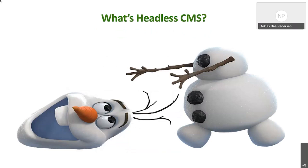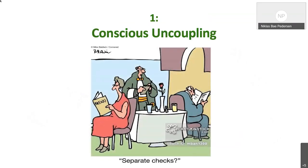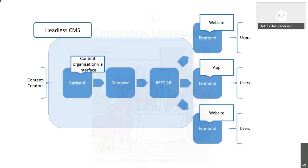So what's headless CMS? The term 'headless' comes from the concept of chopping the head — which is the front end, or the website — from the body, which is the back end, for example the content repository. This means the application is built with an external API. This image captures the idea: the woman is the front end, the man is the back end, and the waiter is the API. Like an old married couple — representing the traditional CMS — they now prefer to talk to each other via the waiter.